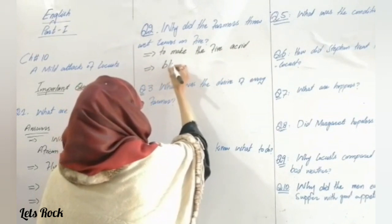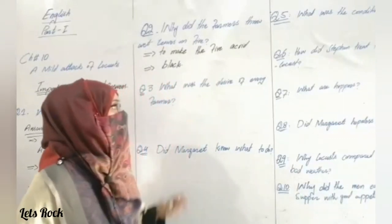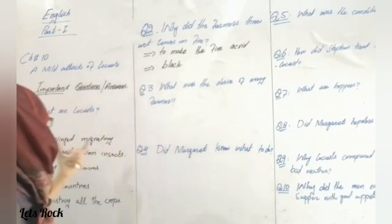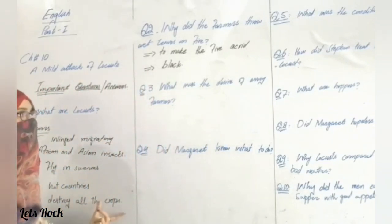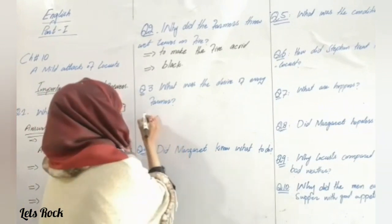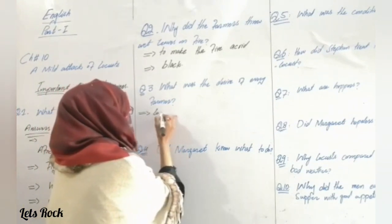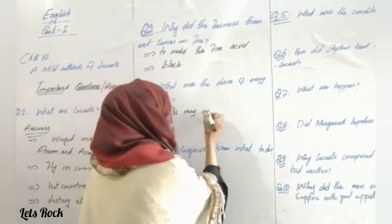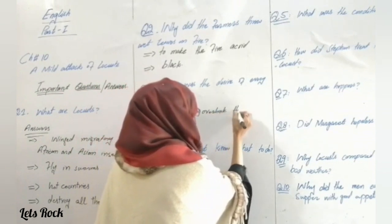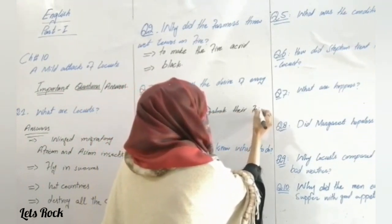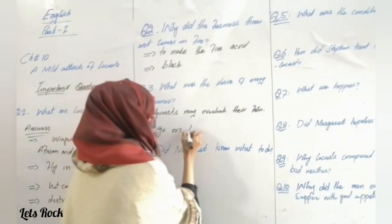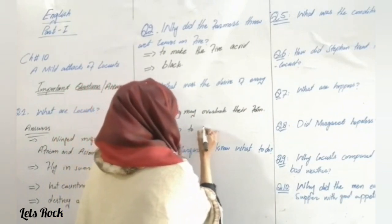Question number three: What was the desire of every farmer? As we have already discussed, locusts destroy all the crops, so every farmer desired that locusts may overlook their farm and go on to the next farm.